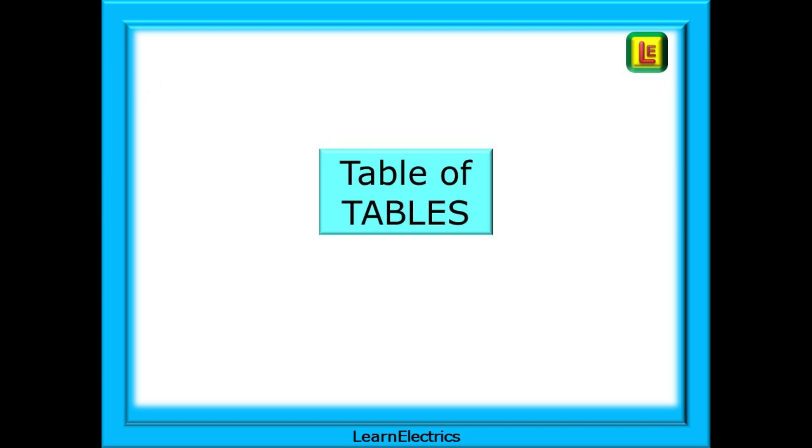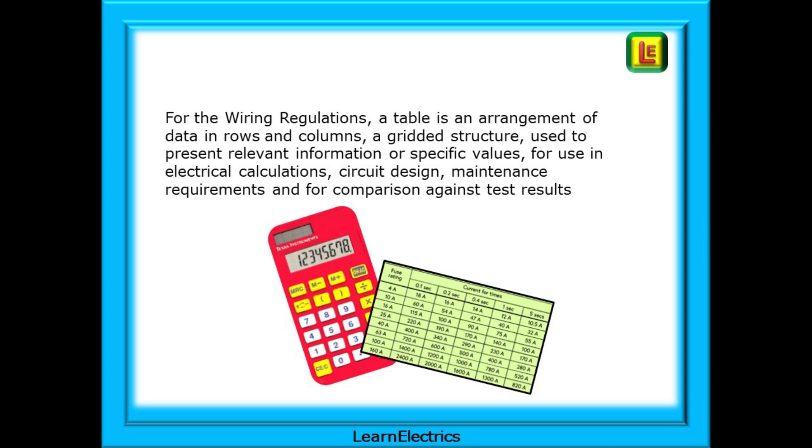Now we can look at table of tables. This is structured in a similar fashion to the table of figures, and being able to use table of tables is so very beneficial. For the wiring regulations, a table is often an arrangement of data in rows and columns, a gridded structure used to present relevant information or specific values for use in electrical calculations, circuit design, maintenance requirements, and for comparison against test results. Rather than conveying an idea, they are giving usable data.